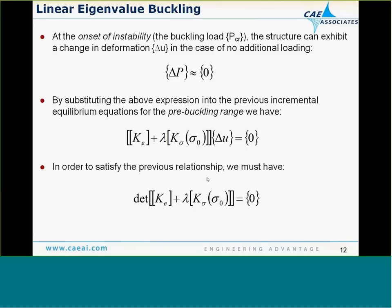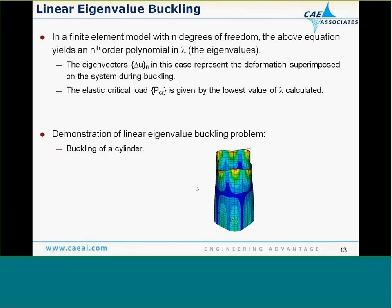At the onset of instability, applying a compressive load eventually means no additional load is needed and displacements grow very large — the change in load essentially becomes zero at the onset of buckling. Plugging that into our equation gives two solutions: the trivial solution where displacements are zero, and the solution where the determinant of the stiffness term is set to zero. Solving that determinant, all the lambdas are the eigenvalues representing the buckling load factor.